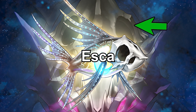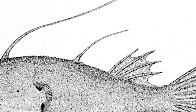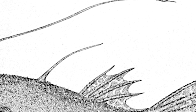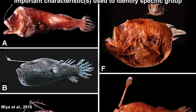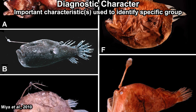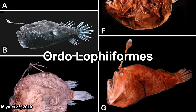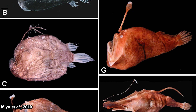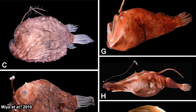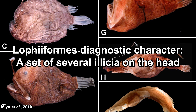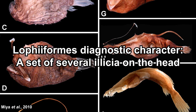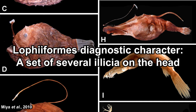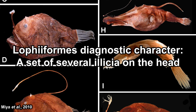Most people would probably think this lure is the most iconic diagnostic character of the anglerfish, and that is in a way correct — the lure is a diagnostic character for the order Lophiiformes, which is the anglerfish. But not all anglerfish are like what you imagine. The actual diagnostic character is a set of several illicia on the head — not the esca, because not all anglerfish have esca.